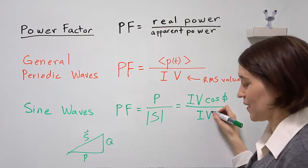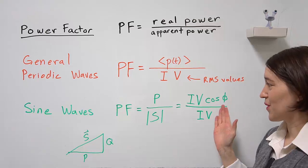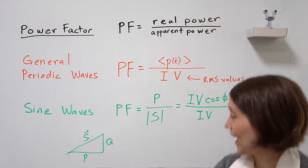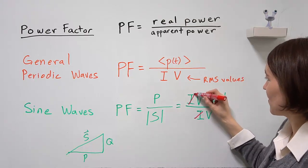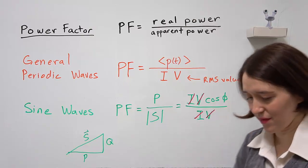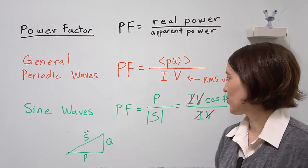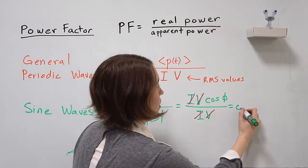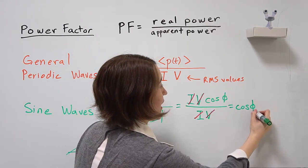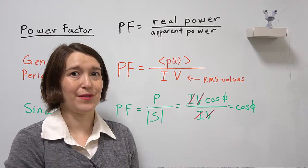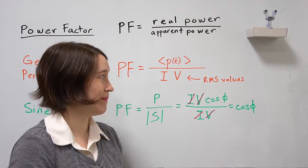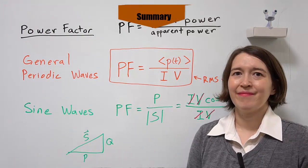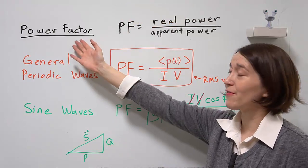We see from this equation that these will cancel, the RMS values, and you'll be left with just cosine of the phase shift between the voltage and the current. In summary, the power factor is defined as the real power over the apparent power.